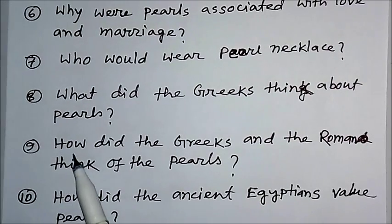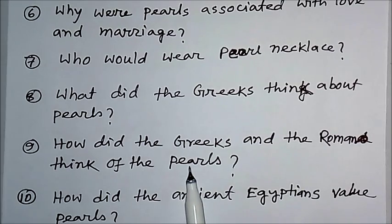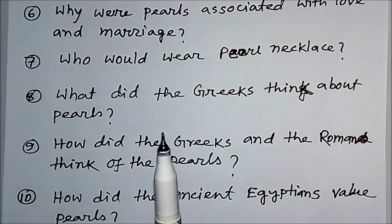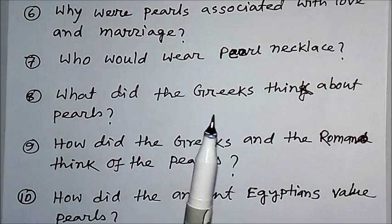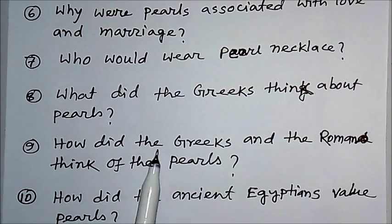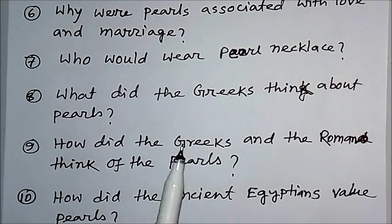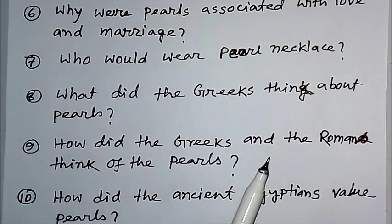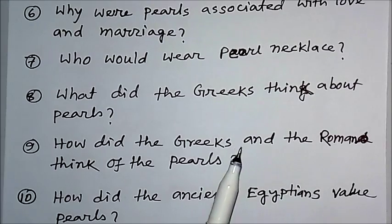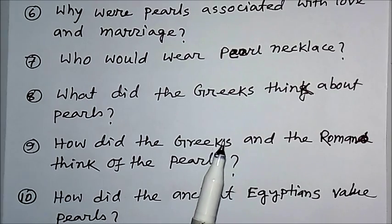Number 9. How did the Greeks and Romans think about pearls? The ancient Greeks thought that the pearl is a sign of wealth and social position. The Romans thought of the pearl as the greatest sign of wealth and social status.